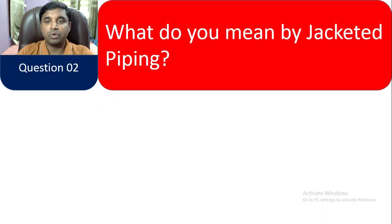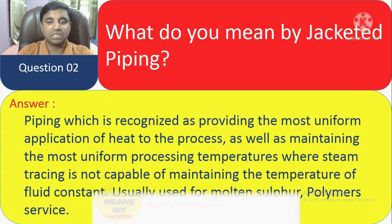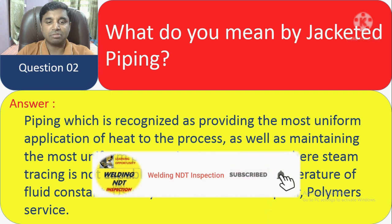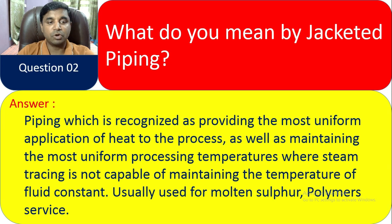Question 2: What do you mean by jacket piping? Jacket piping is recognized as providing the most uniform application of heat to the process, as well as maintaining the most uniform processing temperature where steam tracing is not capable of maintaining the fluid temperature constant. It is usually used for molten sulfur and polymer service.